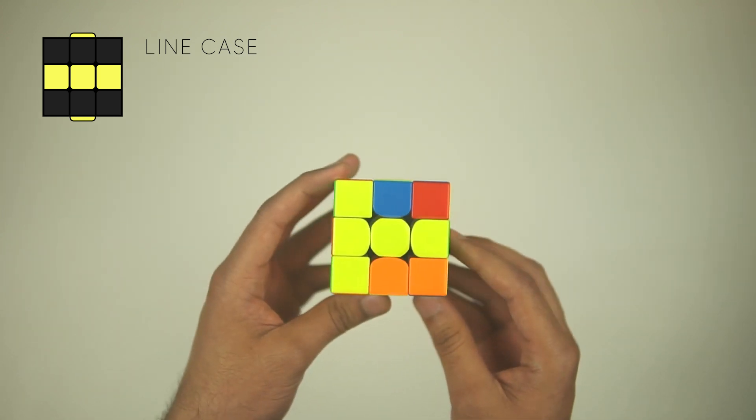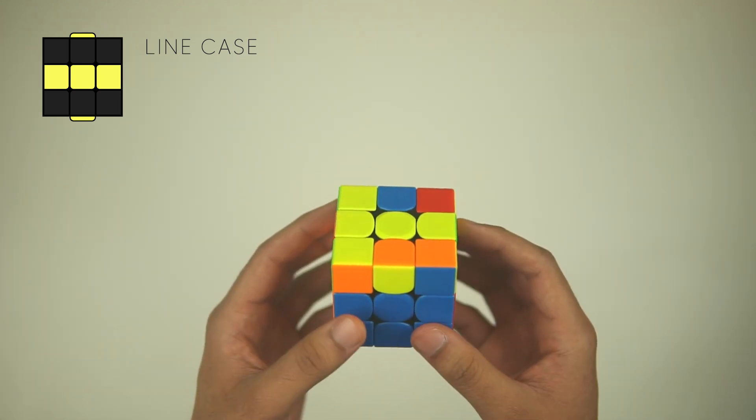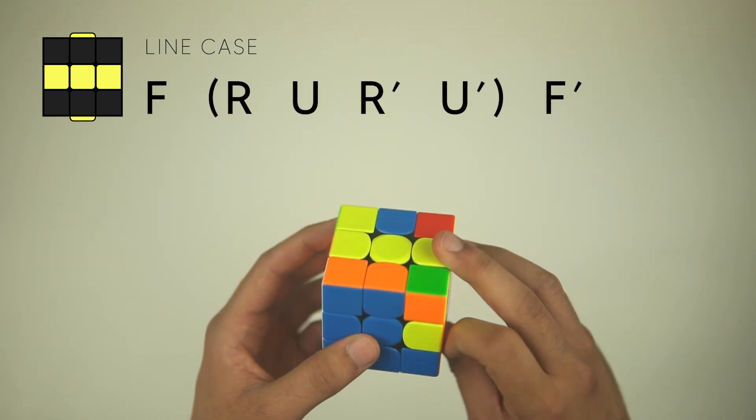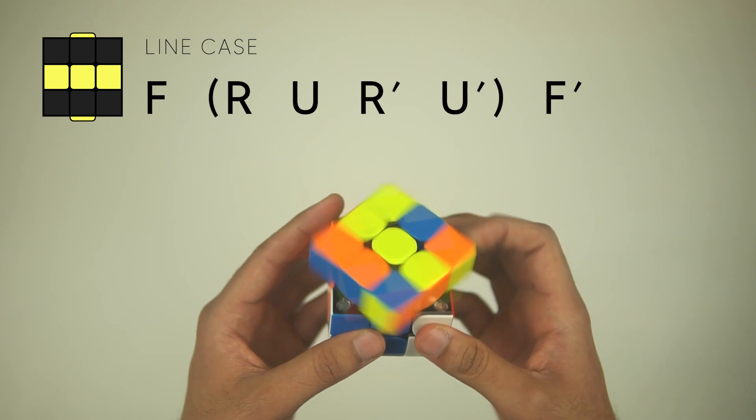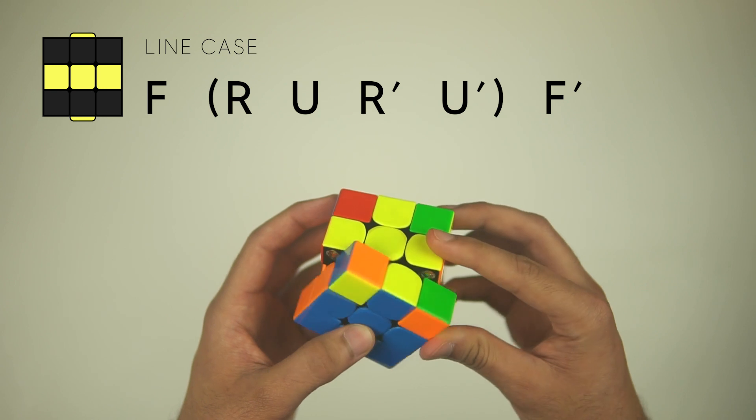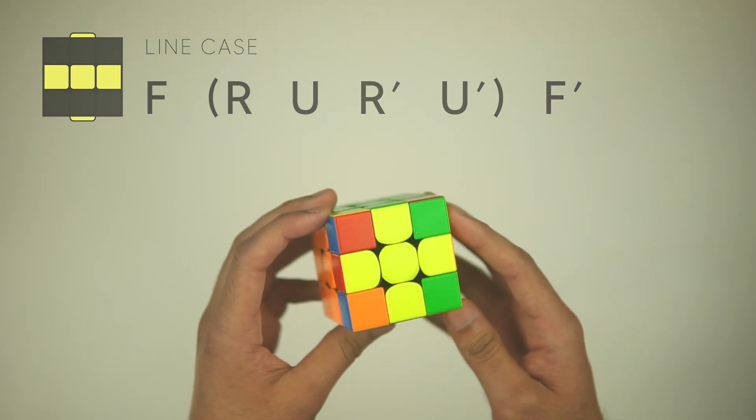We're going to hold it horizontally like this, and we're going to do this algorithm to get the yellow cross. Do an F, R, U, R', U', F', and there's the yellow cross.